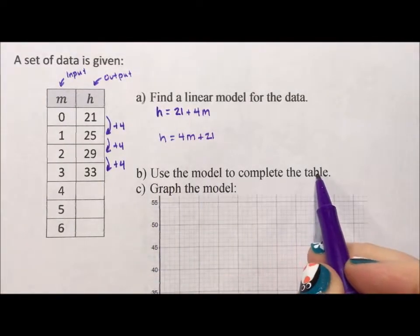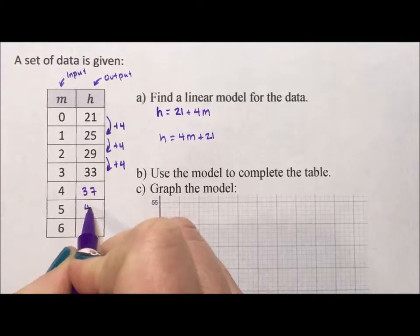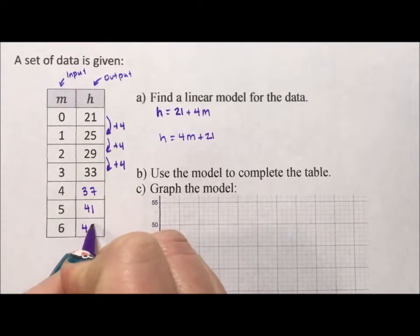Use the model to complete the table. You can also use the pattern. Plus four is 37. Plus four is 41. Plus four is 45.